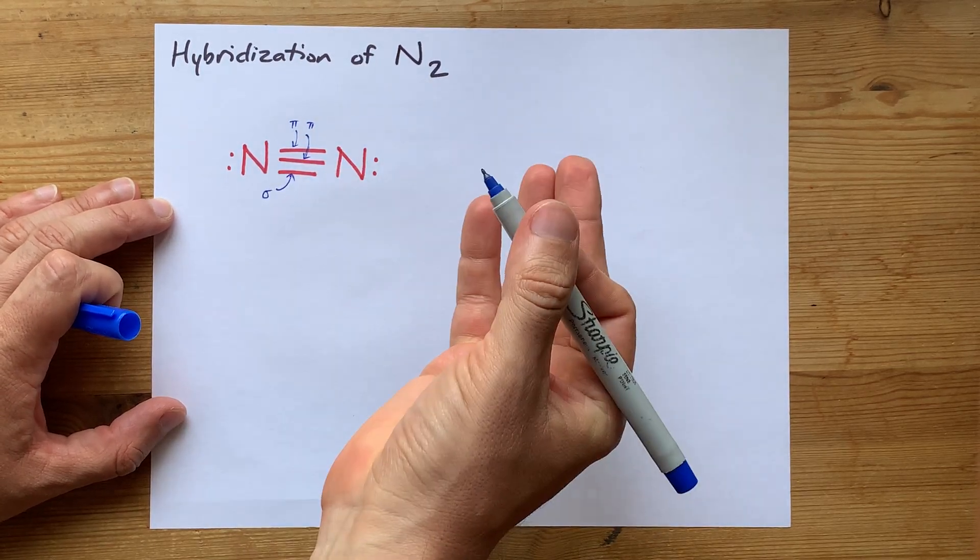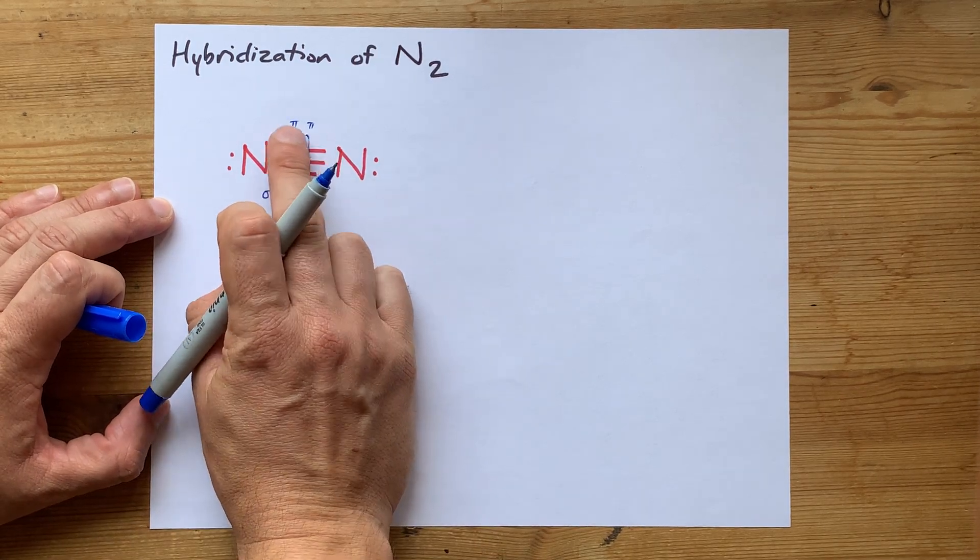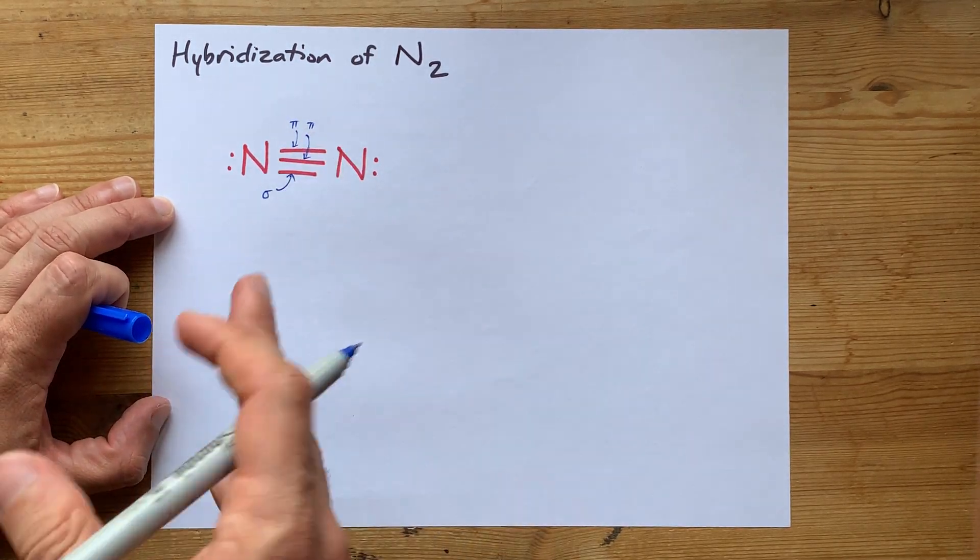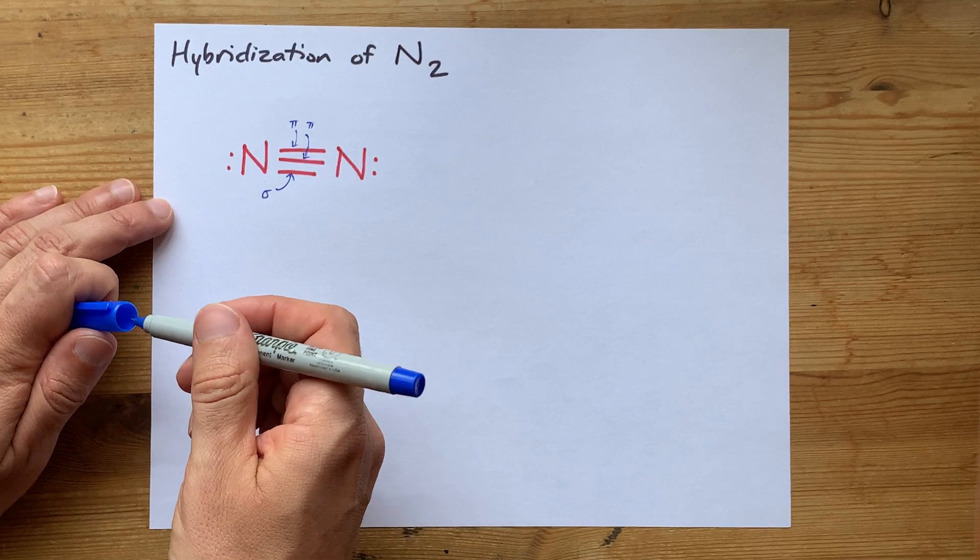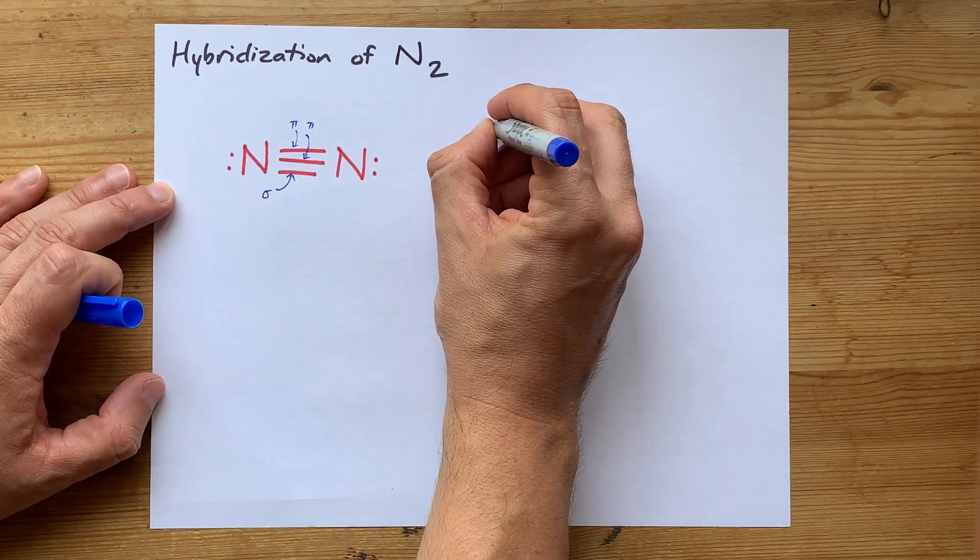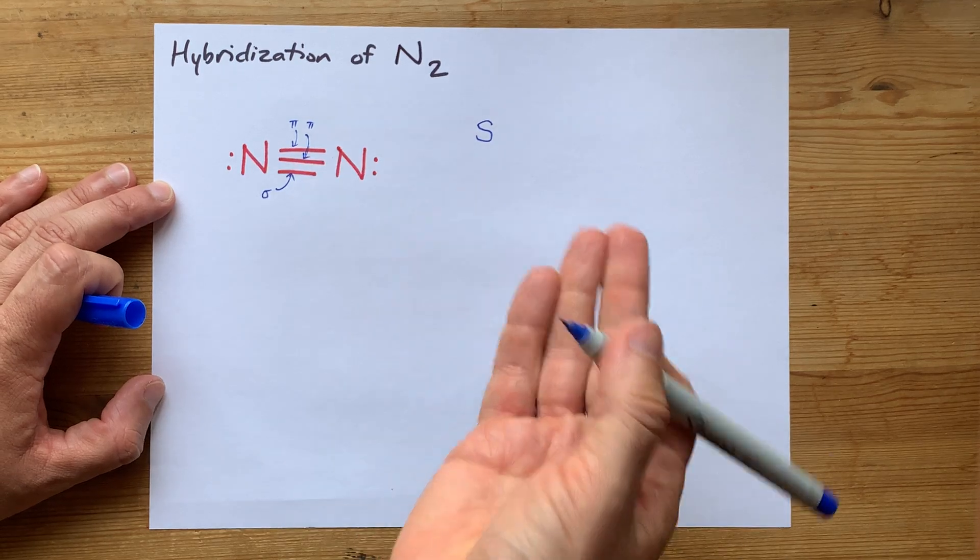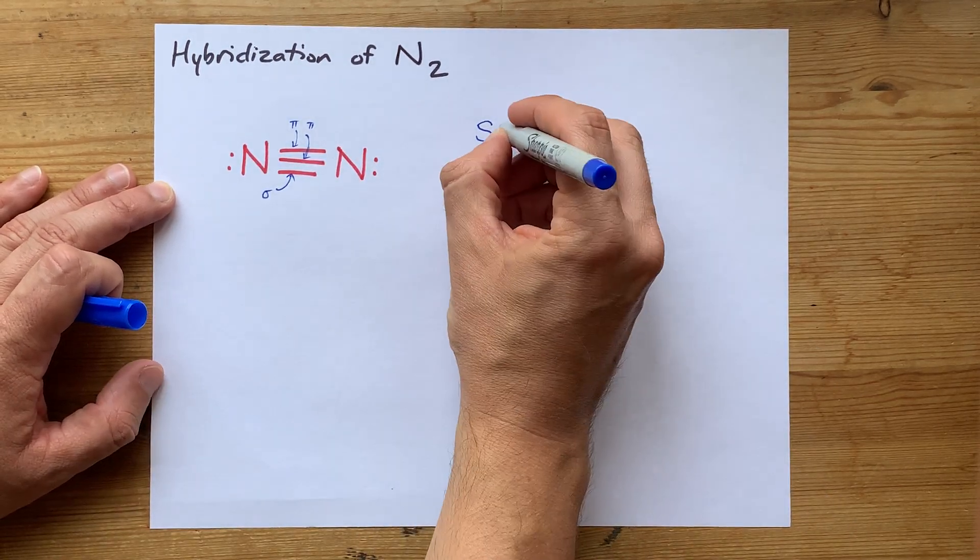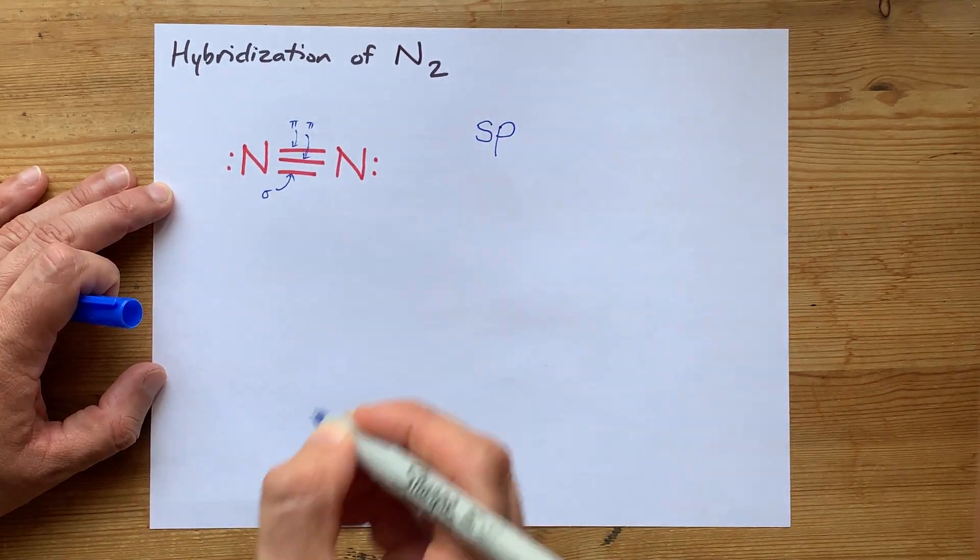Now, what that means is that two of the p orbitals will not be hybridized. So, in order to create this molecule, we're going to hybridize together the 2s orbital and only one of the p's.